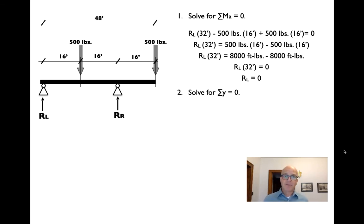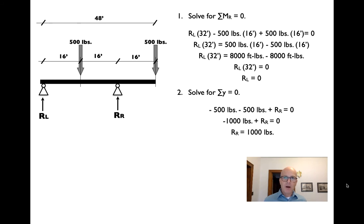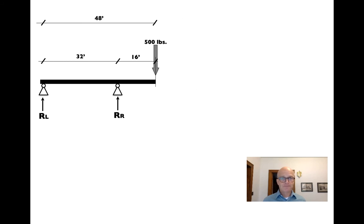We go back and sum forces in the vertical direction: ΣFy = 0. We have 500 pounds and 500 pounds both pushing down, so both are negative. RR is going up, positive, and collectively it all has to equal zero. RR must be equal and opposite to the sum of those two downward forces, so RR = 1,000 pounds and RL = 0.